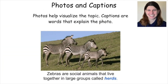Second are photos with captions. While the photos show you an image of what the writer is talking about, don't forget to read the caption or description below the photo to get more information. Here we can see what zebras look like and read a fun fact about them in the caption. This caption also highlights a word in boldface, italics, and color to let you know that this is an important word to know.